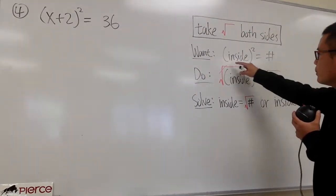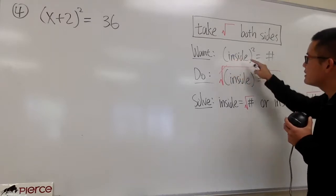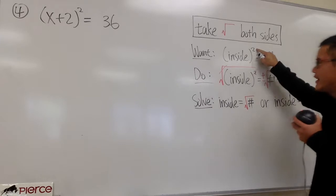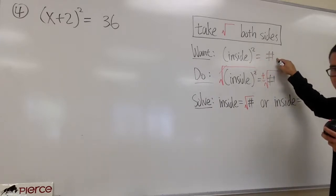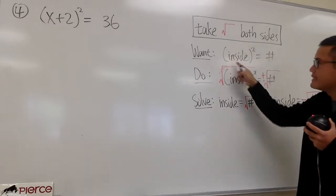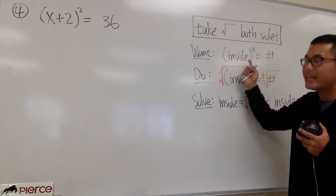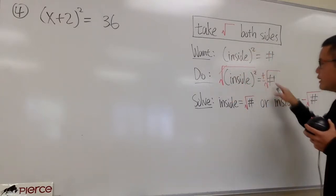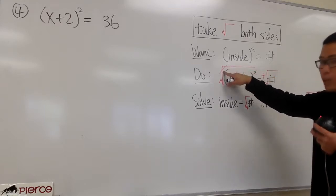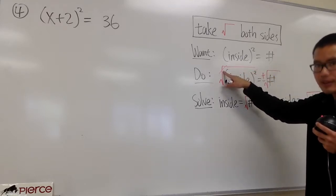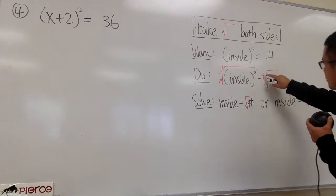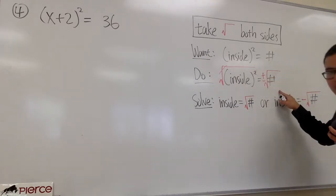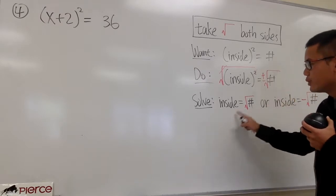First of all, we want to begin by having the equation in this form: parentheses with x inside, and then raised to the second power, and we have to make this equal to a number. We have to isolate this part first. And then we literally just take the square roots on both sides, and the square and the square root will cancel each other out. Be sure you put a plus-minus on the right-hand side with the number, and we will end up with two equations.